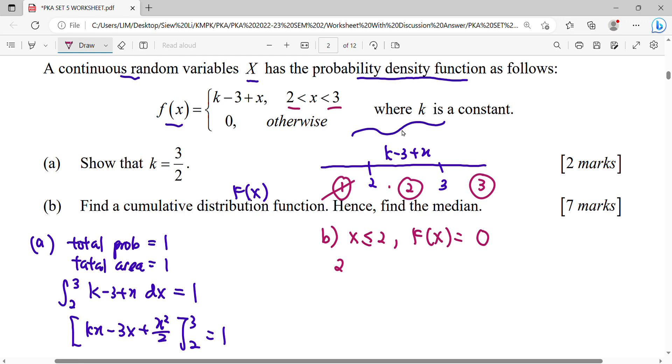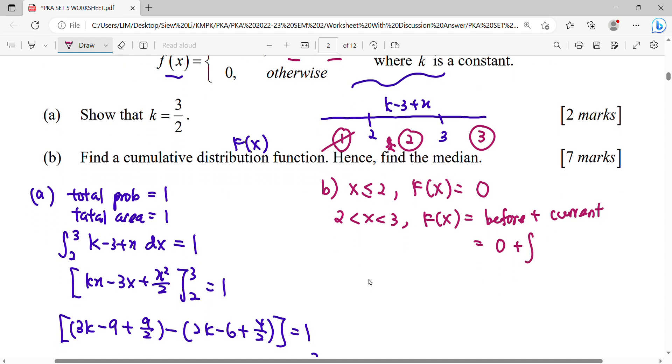Now we're moving to here, second step, which is in the interval 2 and 3. So F besar, how do you calculate F besar? We take before plus current interval. Before this you look at before this. We don't have any probability. We don't have any function. So 0. Currently we have function in this interval. So we're going to integrate for 2 up to X for this function K, where K is 3 over 2. We found it just now.